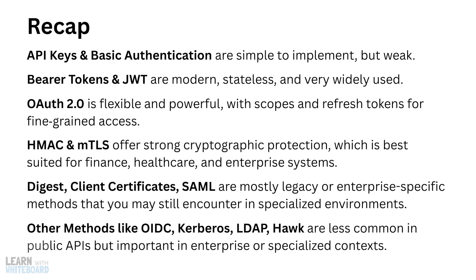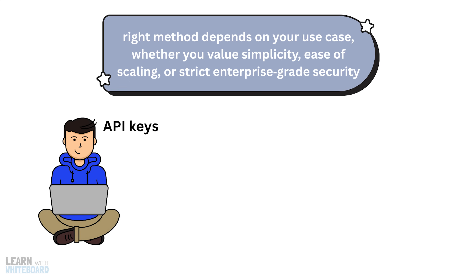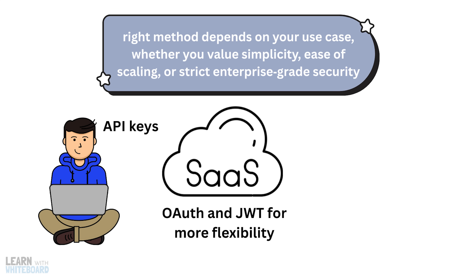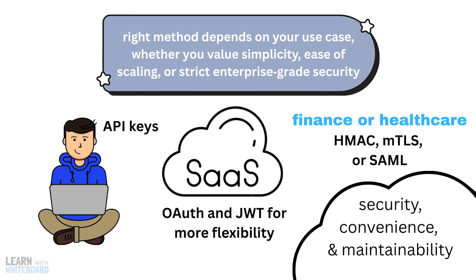Other methods like OIDC, Kerberos, LDAP, and HAWC are less common in public APIs but important in enterprise or specialized contexts. Choosing the right method depends on your use case — whether you value simplicity, ease of scaling, or strict enterprise-grade security. A small side project might get by with just API keys, while a growing SaaS platform could benefit from OAuth and JWT. If you're in a heavily regulated industry like finance or healthcare, options like HMAC, MTLS, or even SAML may be necessary to meet compliance requirements. Ultimately, the goal is to balance security, convenience, and maintainability.